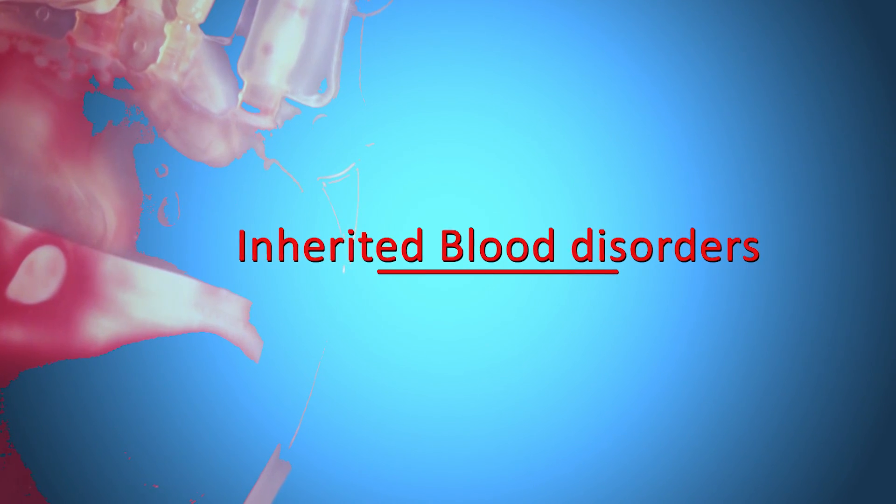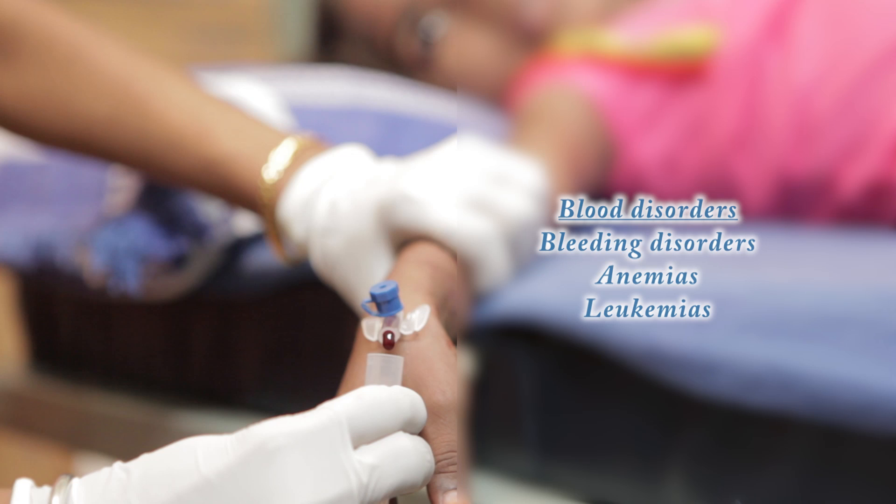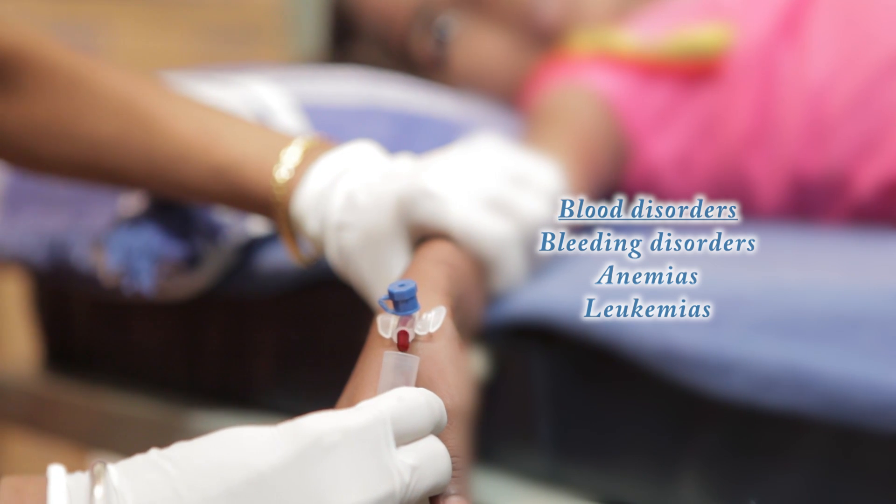Blood disorders can be classified as acute or chronic, and they can also be classified as inherited or acquired. Inherited blood disorders are those you have from birth because they are passed on from your parents or grandparents. Acquired disorders are ones you get later in life, due to a medical reason, ill health, or nutritional deficiency. We will talk specifically about a few important diseases: bleeding disorders, anemias, and blood cancers, commonly known as leukemia.